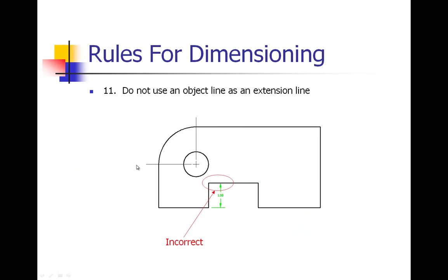Number eleven: do not use the object line as an extension line. Extension lines are the lines extending out beyond our object. Here, this arrowhead is pointing to an object line rather than an extension line. We would want to pull that dimension off to the left and have an extension line on each side.